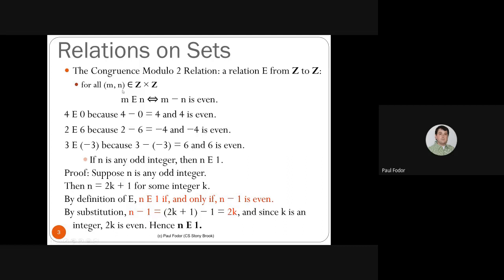Once we have such a relation, we can prove properties about it. For example: if n is any odd integer, then n is in the relation E with 1. By direct proof, suppose n is an arbitrary odd integer. By definition of odd, n equals 2k plus 1 for some integer k. Then n is in relation E with 1 if and only if n minus 1 is even. Substituting, n minus 1 equals 2k plus 1 minus 1, which equals 2k. Since 2k is even, n is in the relation E with 1 for any odd n. This concludes the proof.